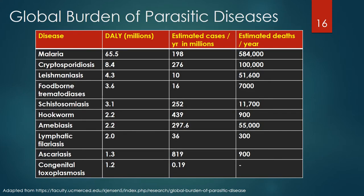The top 10 parasitic diseases ordered by their impact on DALYs include malaria at the top of the list with a DALY impact of 65.5 million, followed by cryptosporidiosis at 8.4, leishmaniasis at 4.3, foodborne trematodiasis at 3.6, schistosomiasis at 3.1, hookworm and amoebiasis both at 2.2, lymphatic filariasis at 2.0, ascariasis at 1.3, and congenital toxoplasmosis at 1.2.